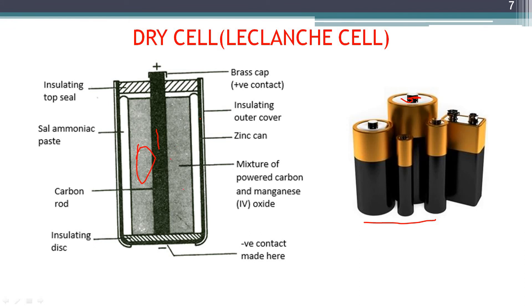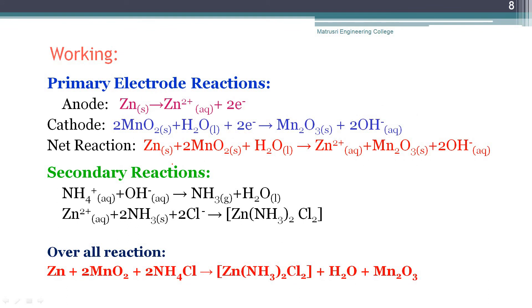The graphite rod is completely surrounded by the paste of ammonium chloride, zinc chloride, and manganese dioxide, mixed with starch to prevent leakage of the electrolyte. Regarding the working of this battery: at the anode, zinc is oxidized to Zn²⁺ by releasing two electrons. These two electrons are involved in the reduction reaction at the cathode. The cathode is graphite — an inert electrode — where manganese dioxide undergoes reaction.